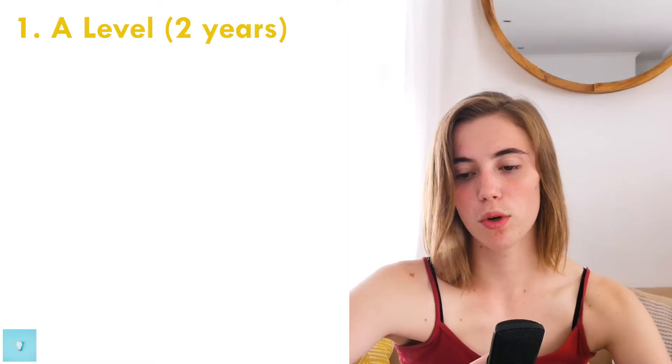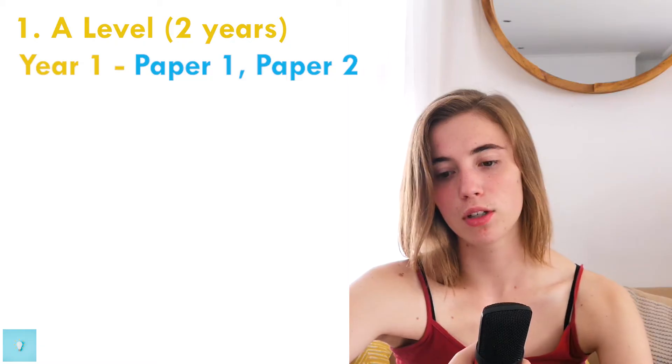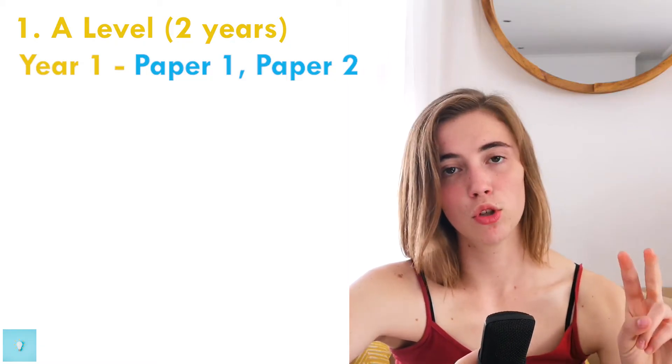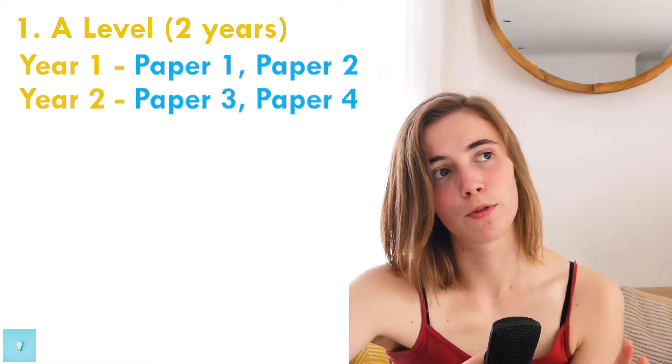Before the content overview, I want to go over the two routes you can take for Cambridge A-level computer science, since A-levels are an extension of AS. The first route is the A-level staged over two years. In year one you do all the AS level content, writing paper one and paper two. In year two you do paper three and paper four, which is the A-level content. Your AS level marks carry over and contribute to your final A-level qualification.